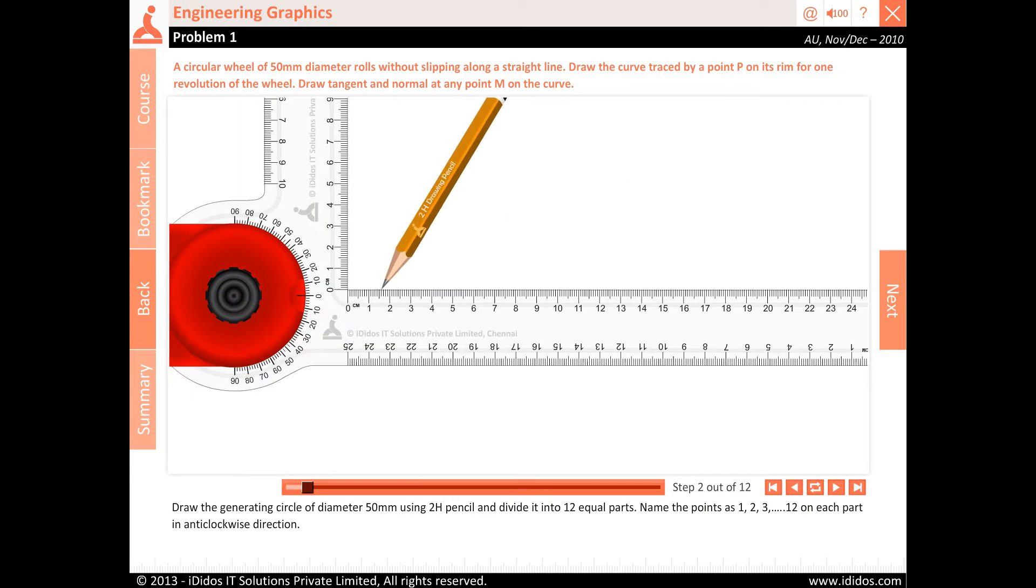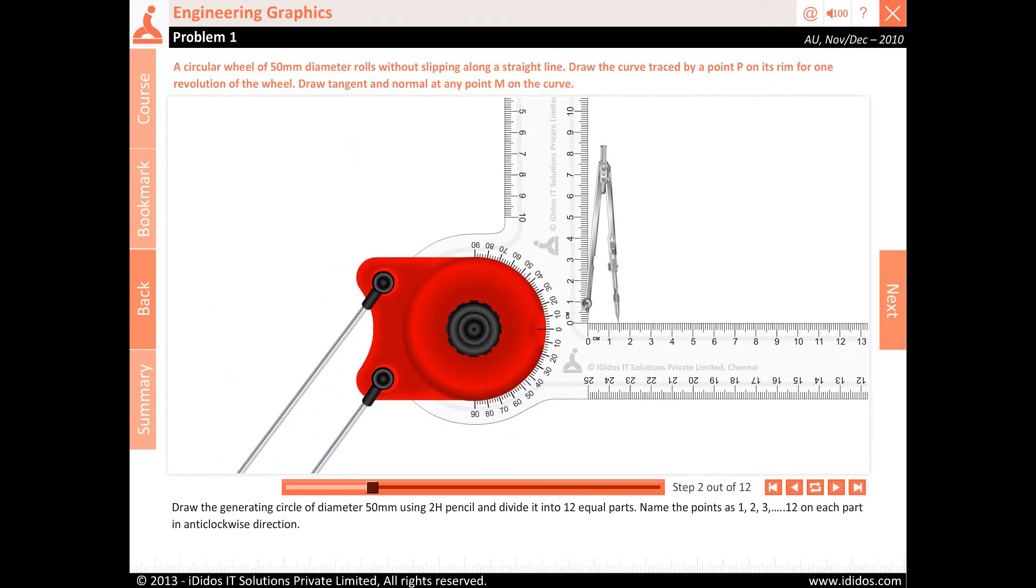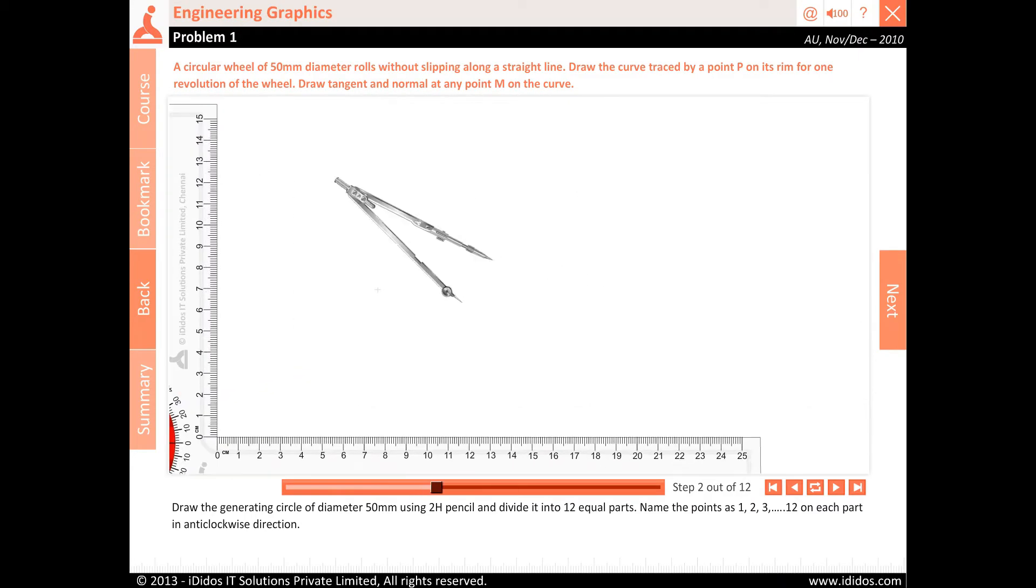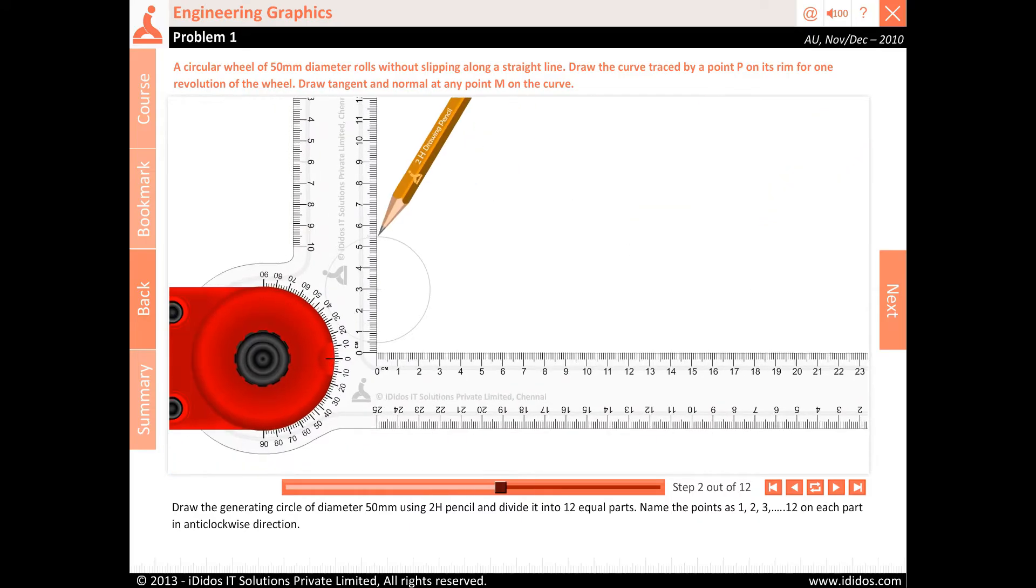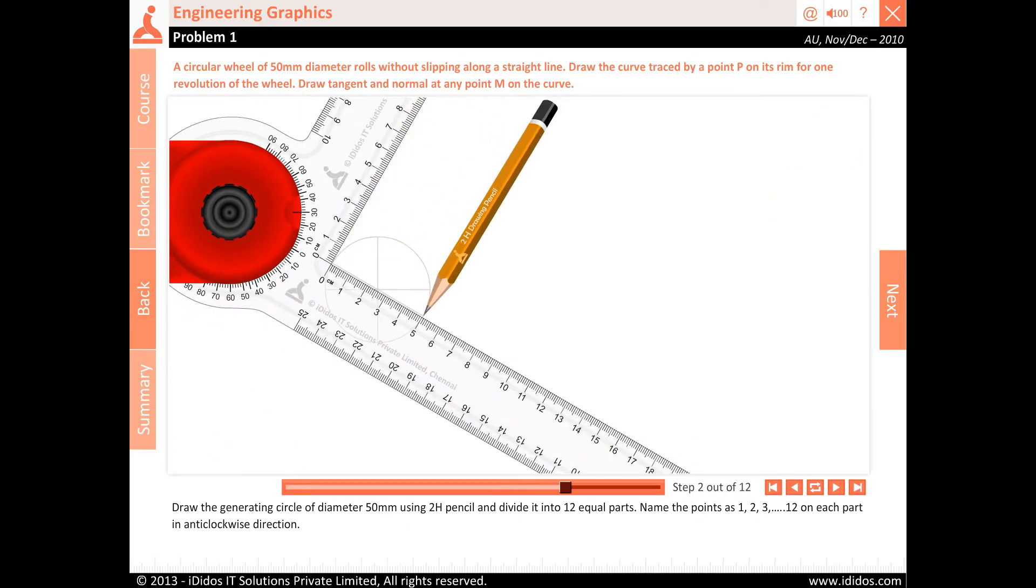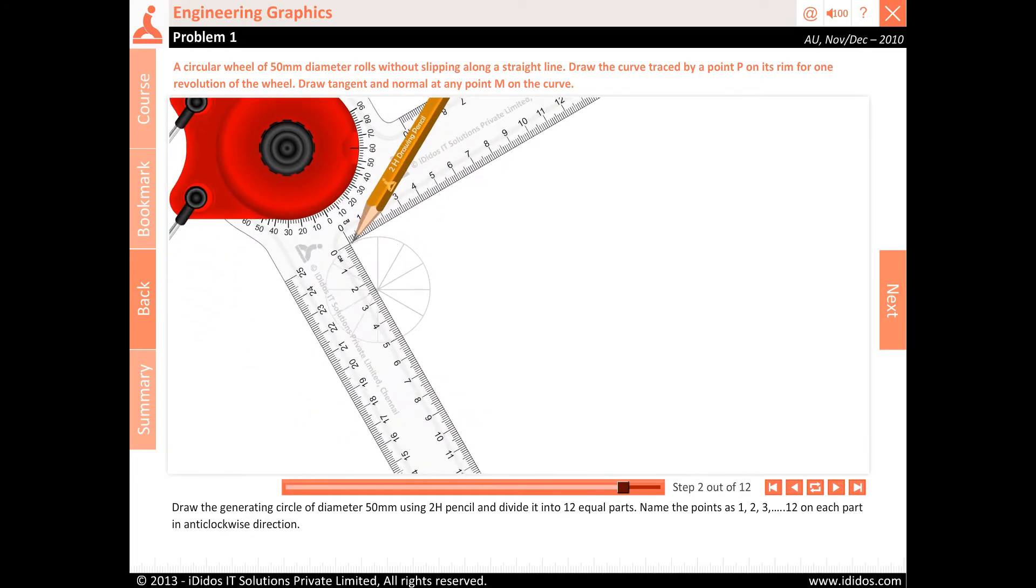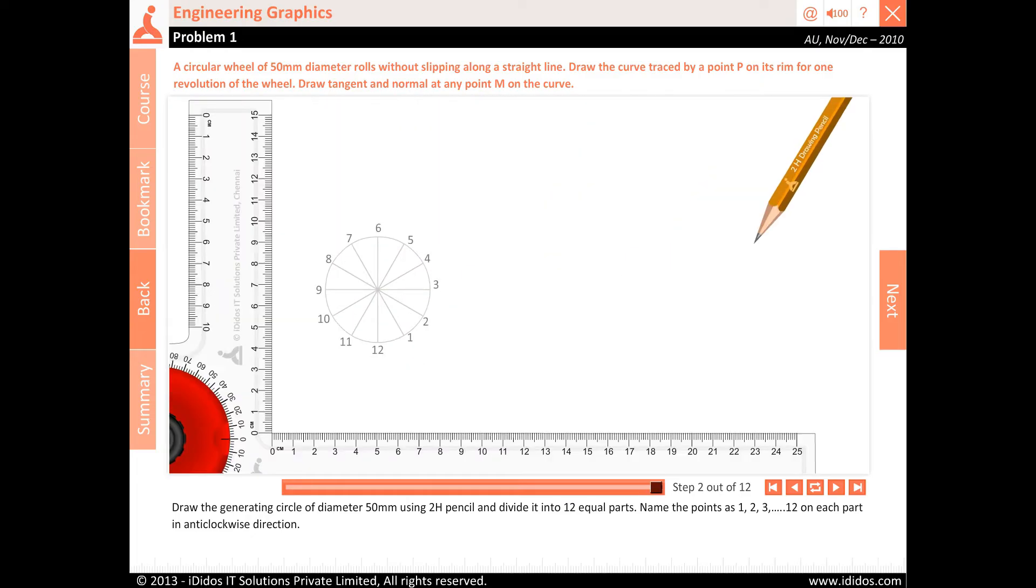Draw the generating circle of diameter 50 mm using 2H pencil and divide it into 12 equal parts. Name the points as 1, 2, 3, 4, 5, 6, 7, 8, 9, 10, 11, 12 on each part in anti-clockwise direction.